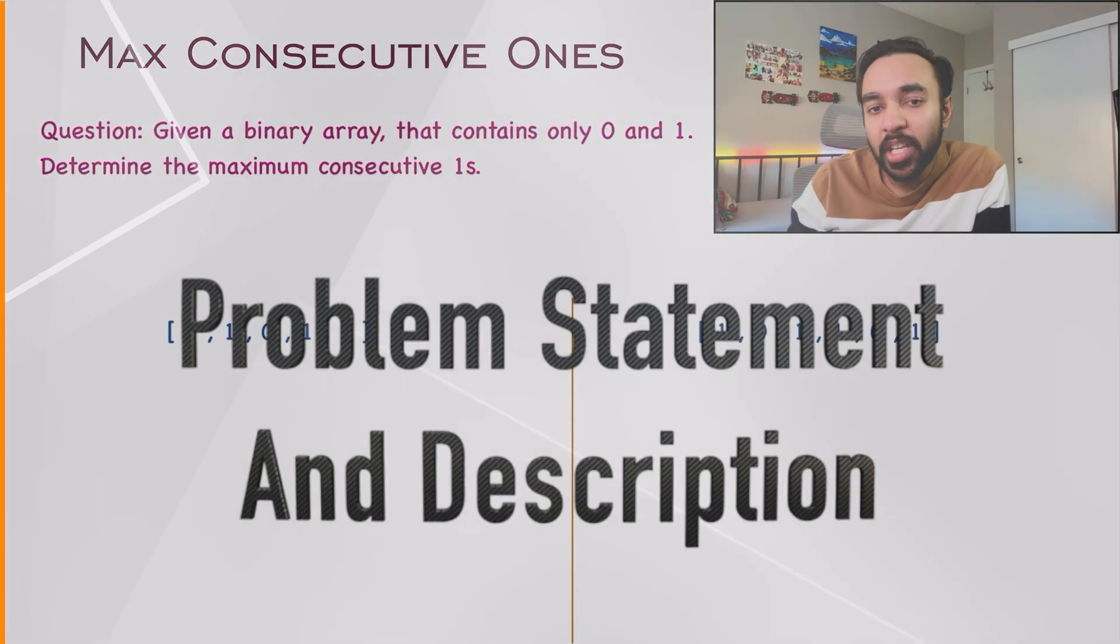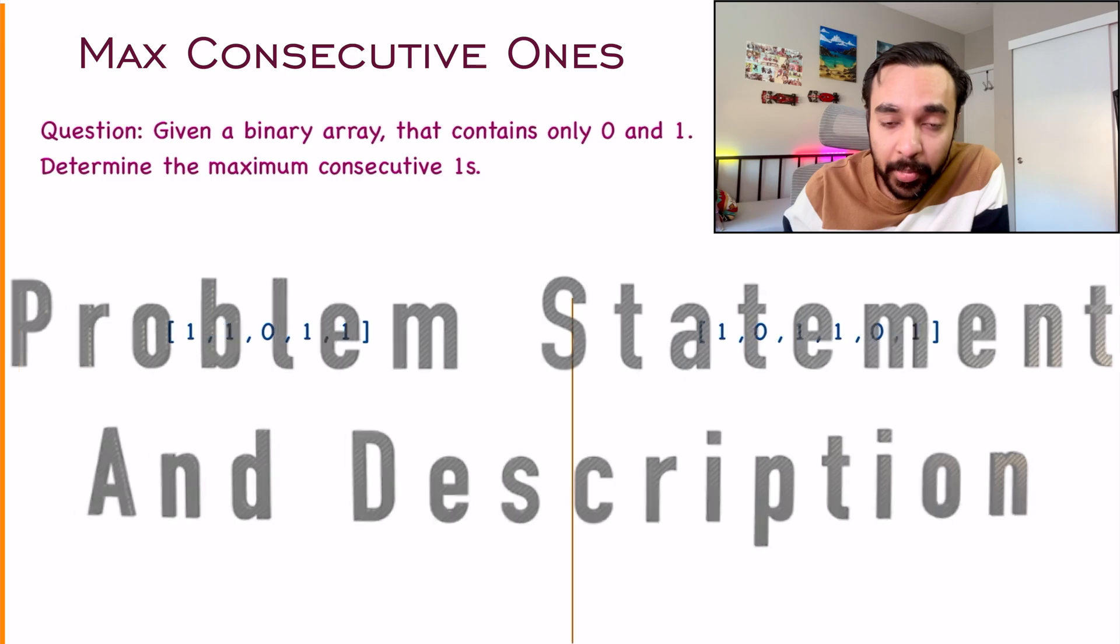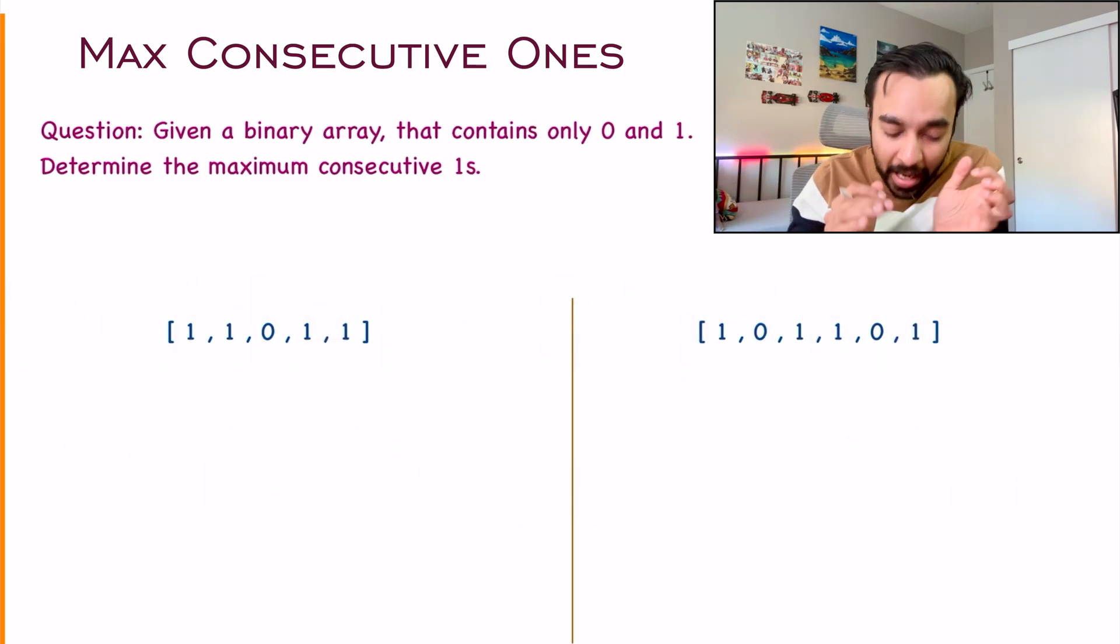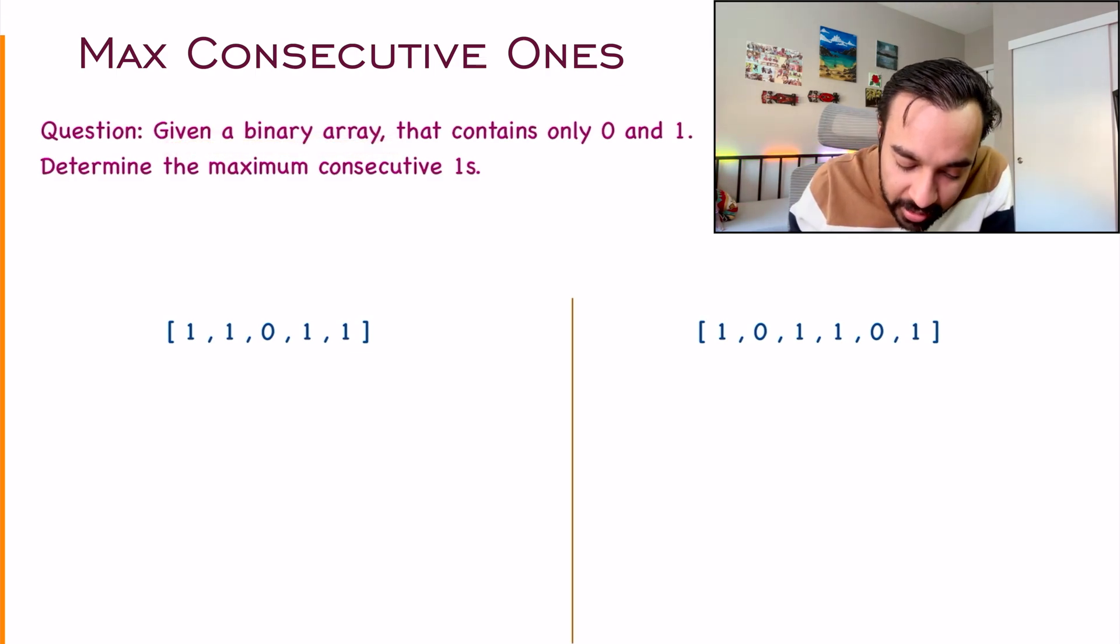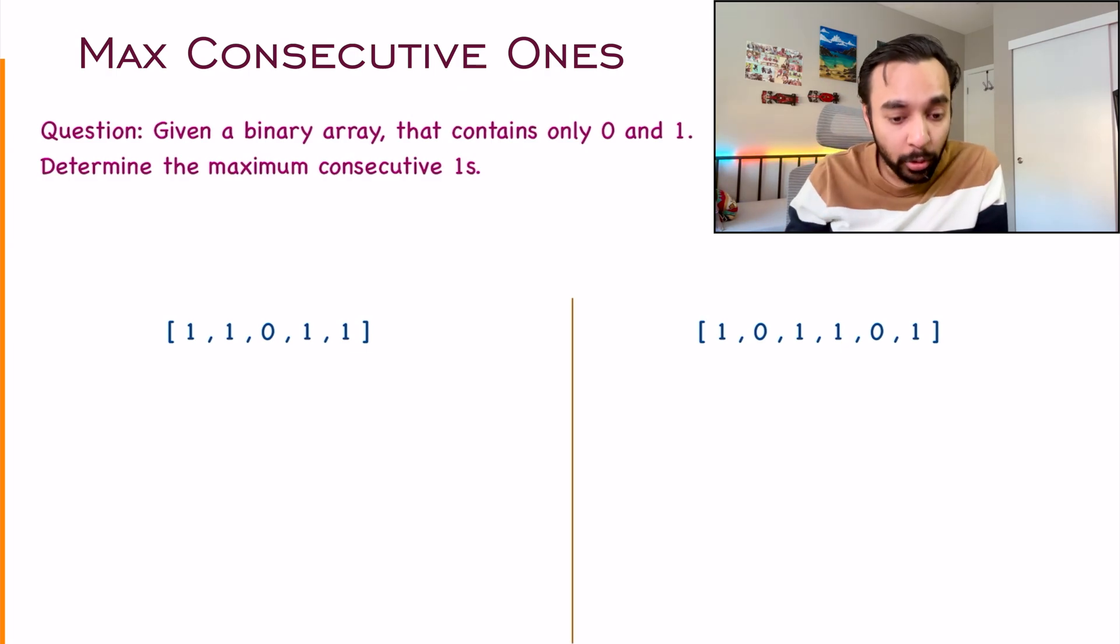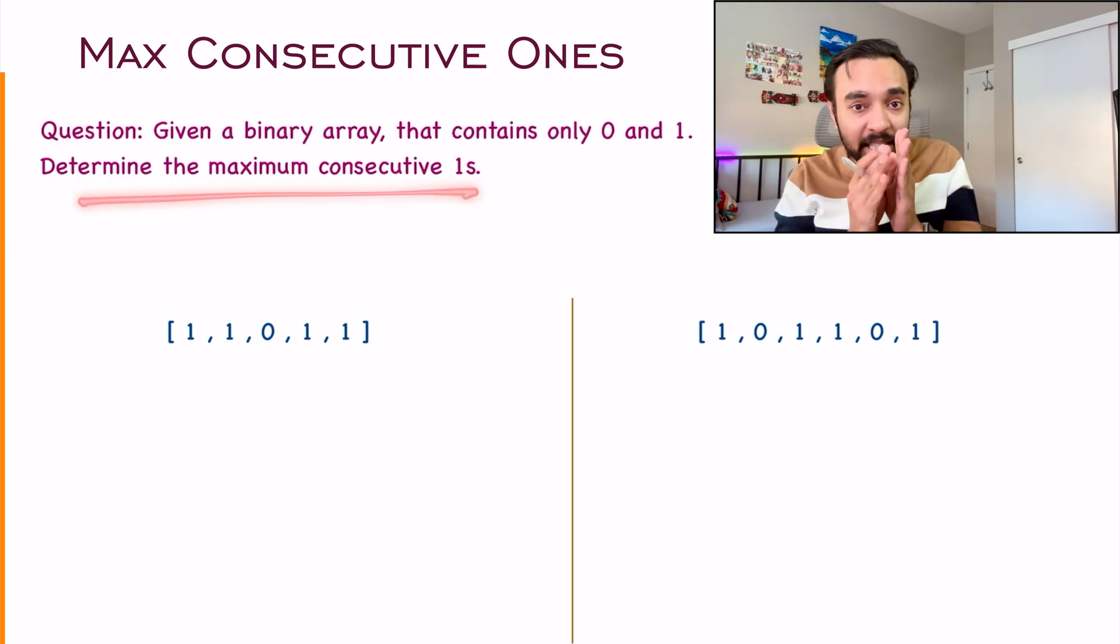First of all, let us try to make sure that we are understanding the problem statement correctly. It is a fairly simple problem and pretty straightforward too. So you are given a binary array, that means the array only has zeros and ones, and you have to tell me what are the maximum number of consecutive ones that you can find in this array.